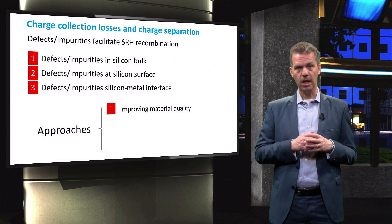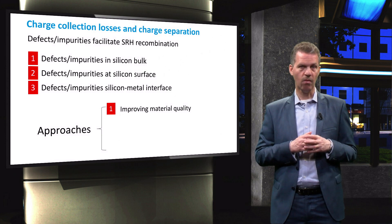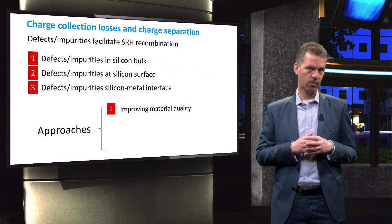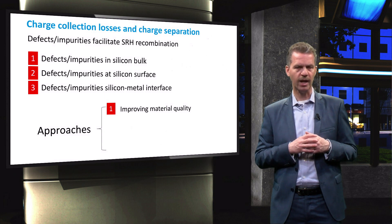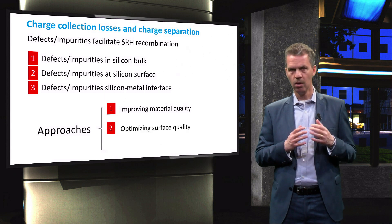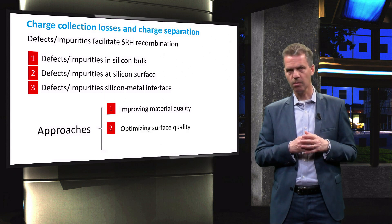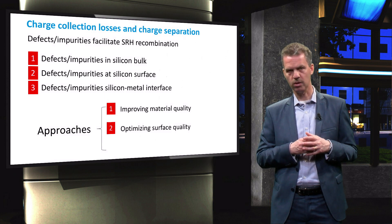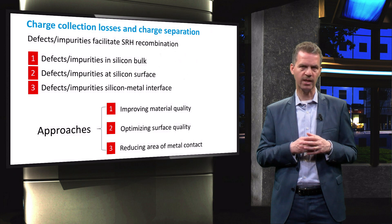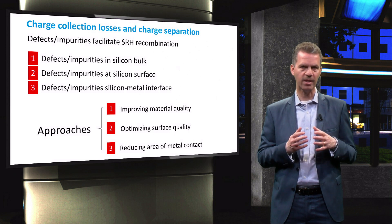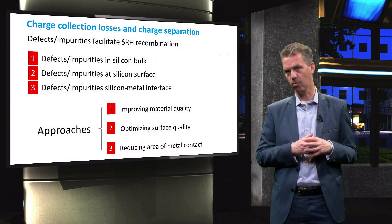We will start by looking at the material quality of a crystalline silicon wafer and which types of defects are present. We will discuss methods to improve and optimize the surface quality, and show how contacts can be designed such that the area where metal and semiconductor are in direct contact is reduced.